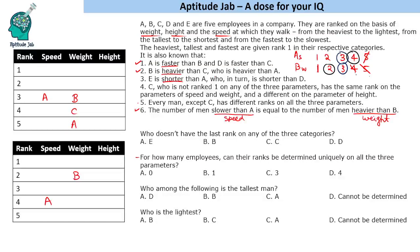In Case 1 with B third in weight, C and A follow, but A cannot be fourth since that's reserved — A will be last in weight here. In Case 2, with B second, C and A follow. Now C has the same rank in speed and weight. In Case 1, C's weight rank is four, so speed is also four. In Case 2, the only possibility is C third in both parameters.